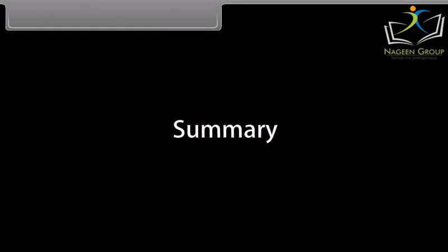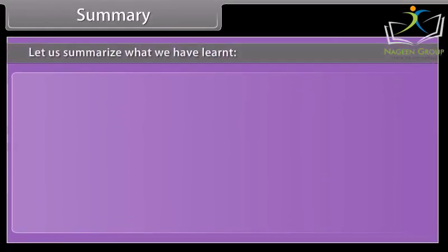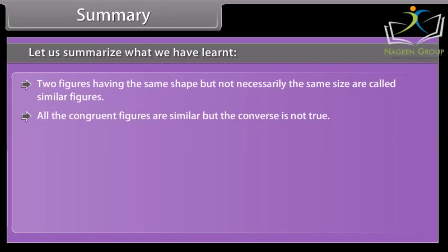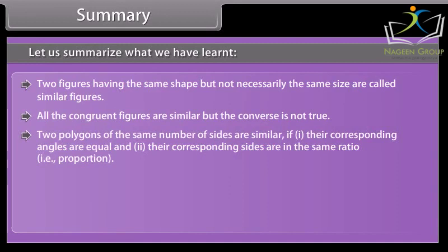Summary. Two figures having the same shape but not necessarily the same size are called similar figures. All congruent figures are similar, but the converse is not true. Two polygons of the same number of sides are similar if: one, their corresponding angles are equal, and two, their corresponding sides are in the same ratio, that is, proportion.